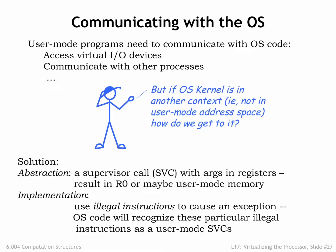As it turns out, we have a way of transferring control from a user mode program to a specific OS handler — just execute an illegal instruction. We'll adopt the convention of using illegal instructions with an opcode field of 1 to serve as supervisor calls. The low-order bits of these SVC instructions will contain an index indicating which SVC service we're trying to access.